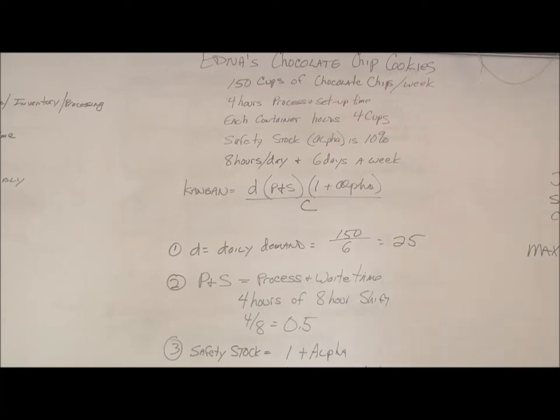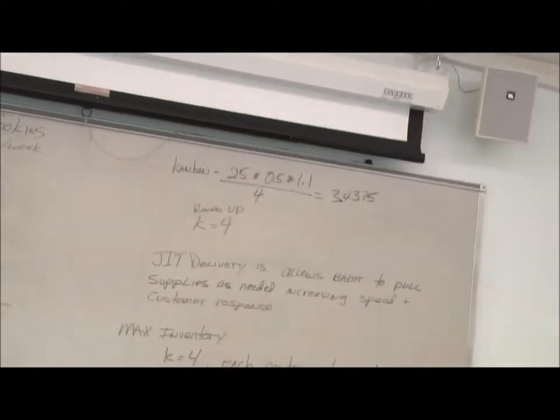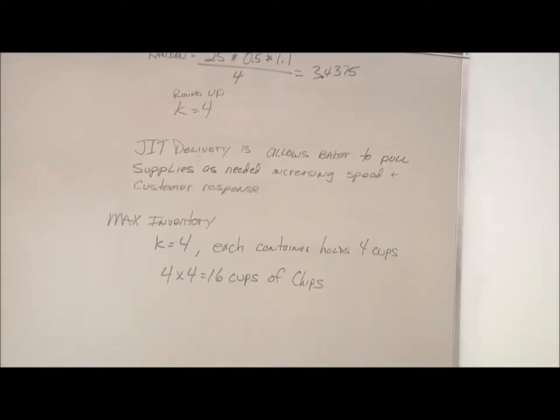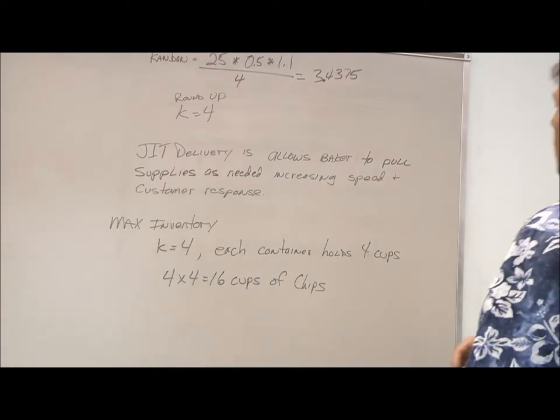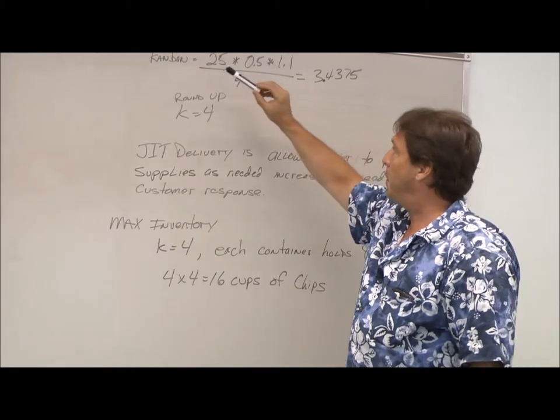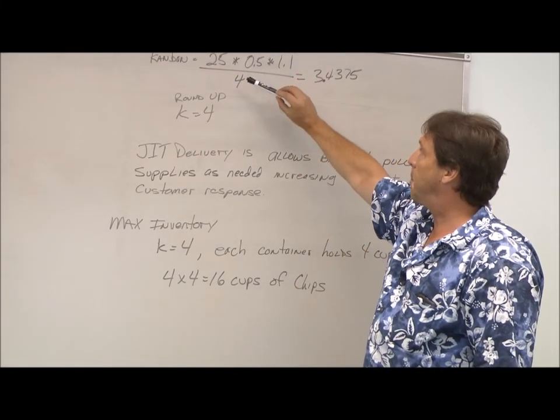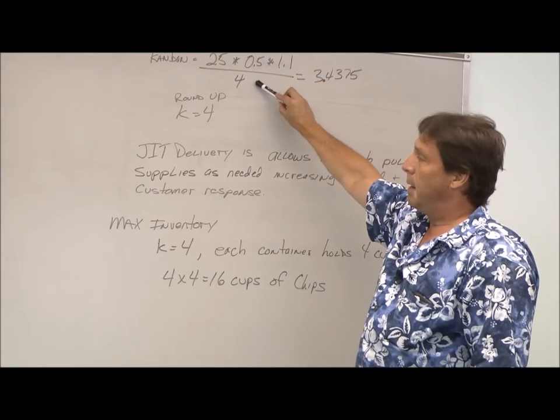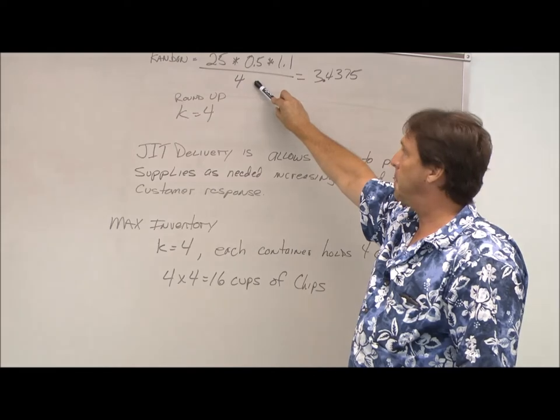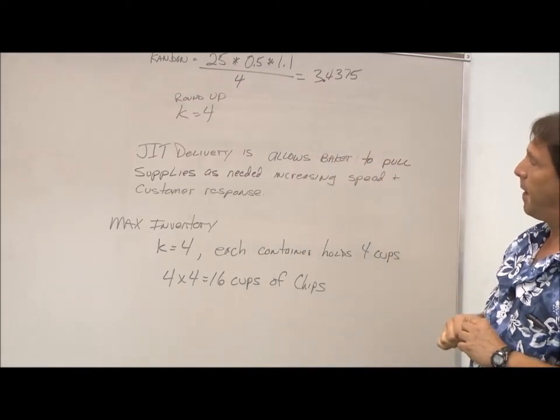All right, so let's see how this all shakes out. So finally, we just stick the numbers in. Our 25 cups per day, our process wait time is 0.5, our safety stock is 1.1, and we have four cups in each container. So that gives us 3.4375.